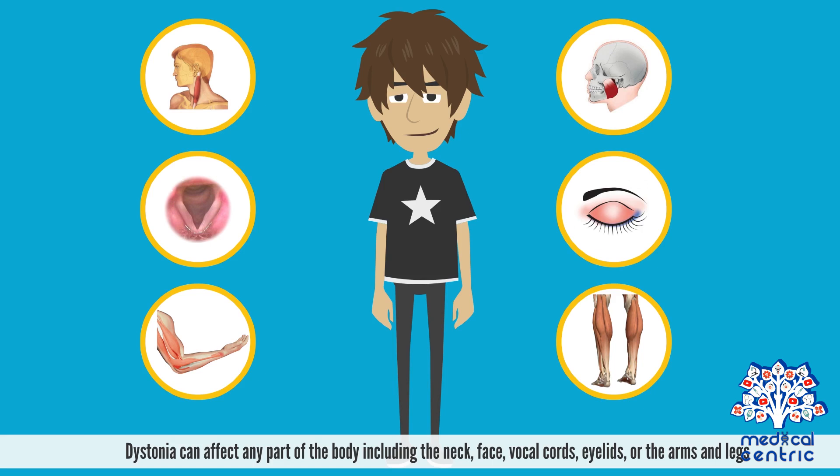Dystonia can affect any part of the body, including the neck, face, vocal cords, eyelids, or the arms and legs.